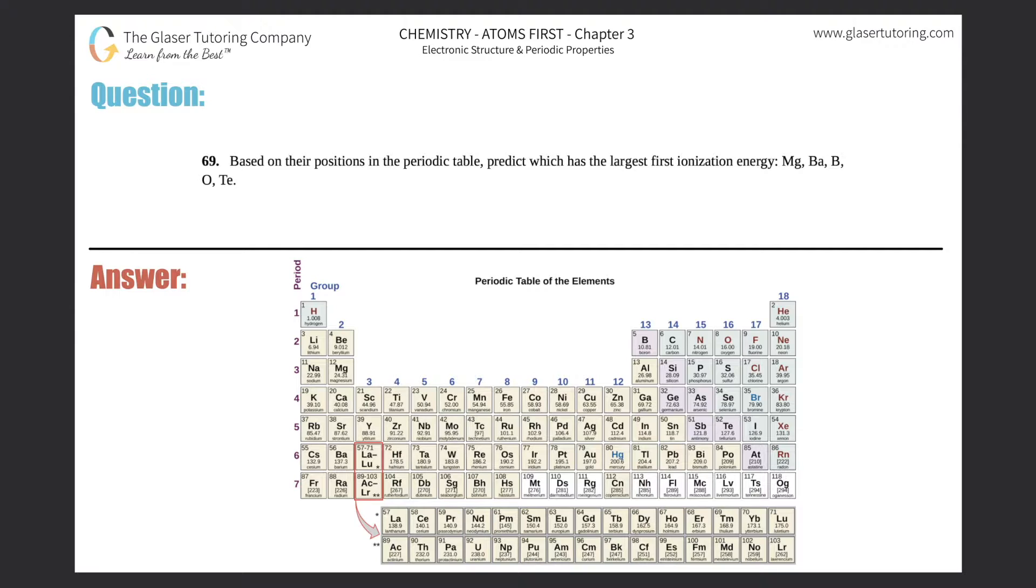Number 69: Based on their positions in the periodic table, predict which has the largest first ionization energy: Mg, Ba, B, O, or Te. Okay, so first things first, what does ionization energy mean? Ionization energy is basically the energy required in order to remove an electron, so you're always becoming a positive charge. Ionization energy is always removing an electron, it's never gaining.